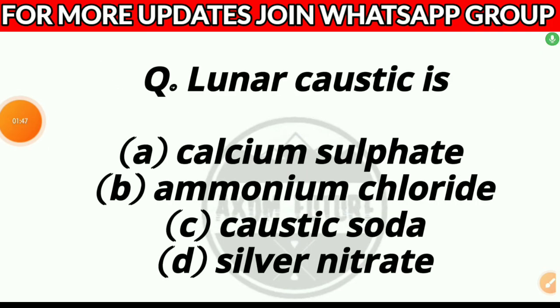Question 7. Lunar caustic is: Option A, calcium sulfate; Option B, ammonium chloride; Option C, caustic soda; or Option D, silver nitrate. Answer: Option D, silver nitrate.